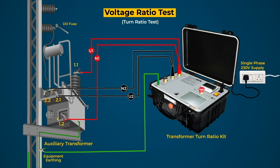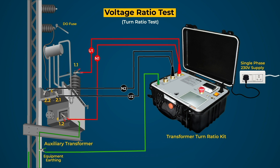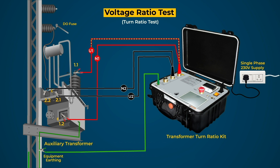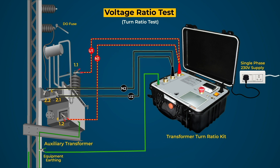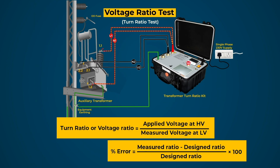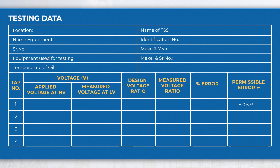Check all the connections and switch on the single-phase AC supply. Now 30 volt AC voltage is injected to HV winding and a voltage is induced in LV winding, which is measured by the test kit. The kit calculates the turn ratio and percentage error. Conduct the test for all the taps of AT. Testing data may be recorded in this format for further investigation and future reference.